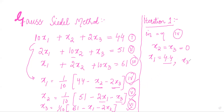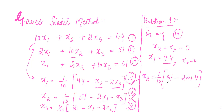With x1 equal to 4.4 and x3 still equal to 0, from equation 5: x2 equals one-tenth of 51 minus 2 times x1, that is 2 into 4.4 equals 8.8. So x2 equals one-tenth of (51 minus 8.8) equals one-tenth of 42.2, giving x2 equals 4.22.